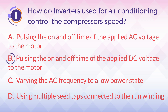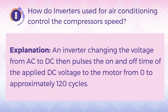The answer is B. Pulsing the on and off time of the applied DC voltage to the motor. Explanation: An inverter changes the voltage from AC to DC, then pulses the on and off time of the applied DC voltage to the motor from 0 to approximately 120 cycles.